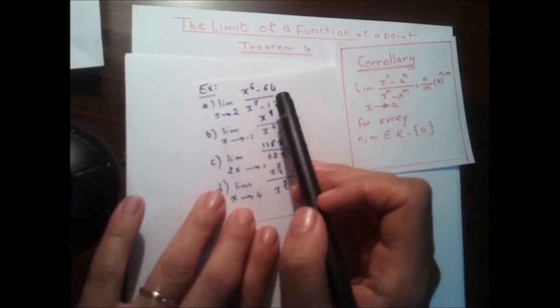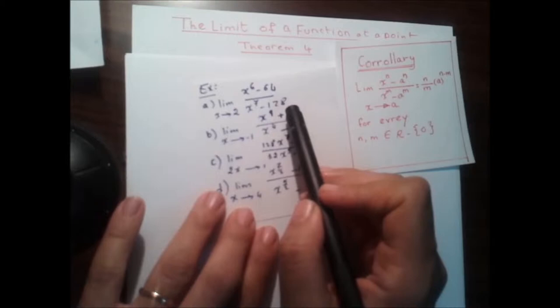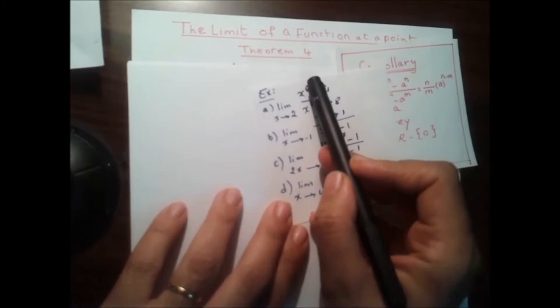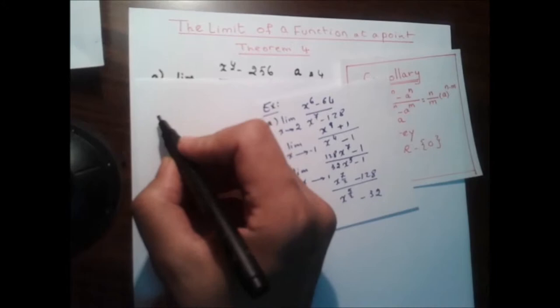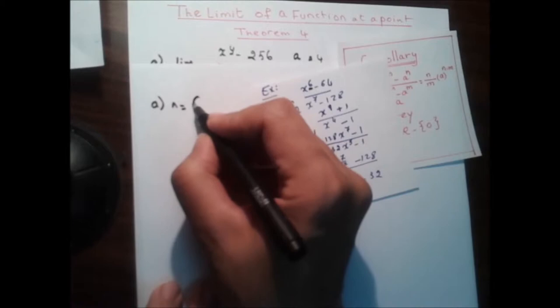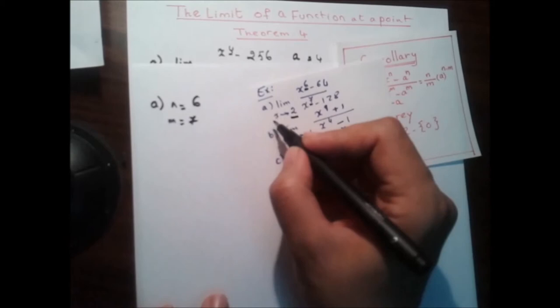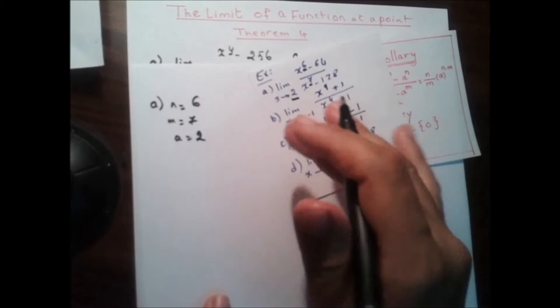Now let's take more examples. Find the limit as x tends to a of (x^6 minus 64) over (x^7 minus 128). We need to change this function into the corollary form. The power of x in the numerator gives n equal to 6. The power of x in the denominator gives m equal to 7. Since x tends to 2, we have a equal to 2.